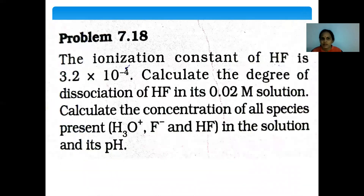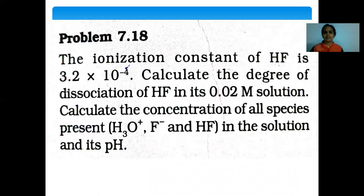Problem 7.18: The ionization constant of HF is 3.2 × 10⁻⁴. Calculate the degree of dissociation of HF in its 0.02 molar solution. Also calculate the concentration of all species present — H₃O⁺, F⁻, and HF — in the solution. The Ka of HF is given as 3.2 × 10⁻⁴.